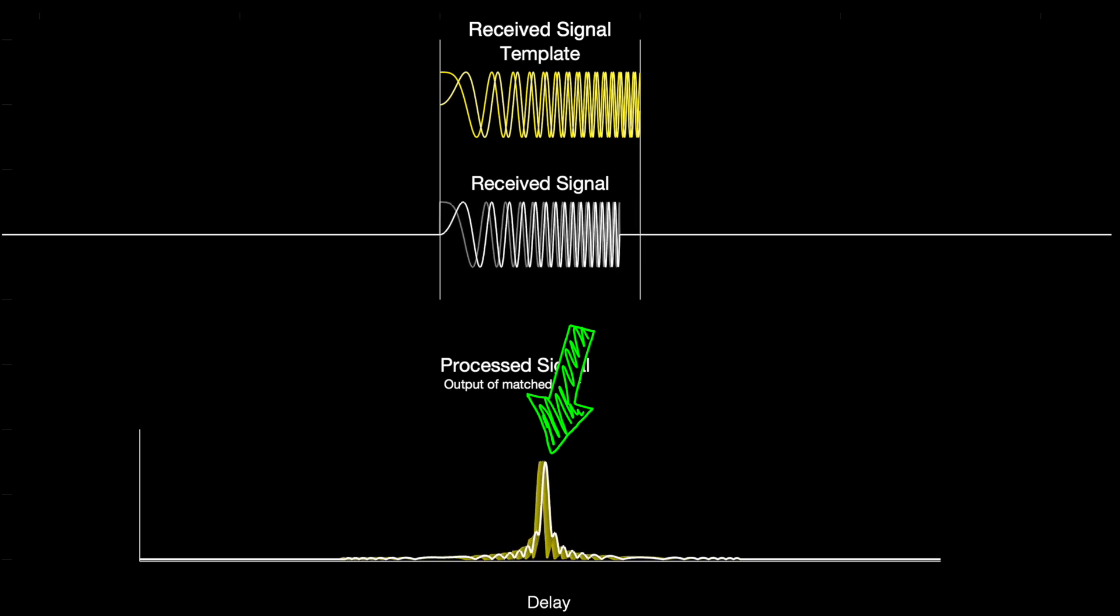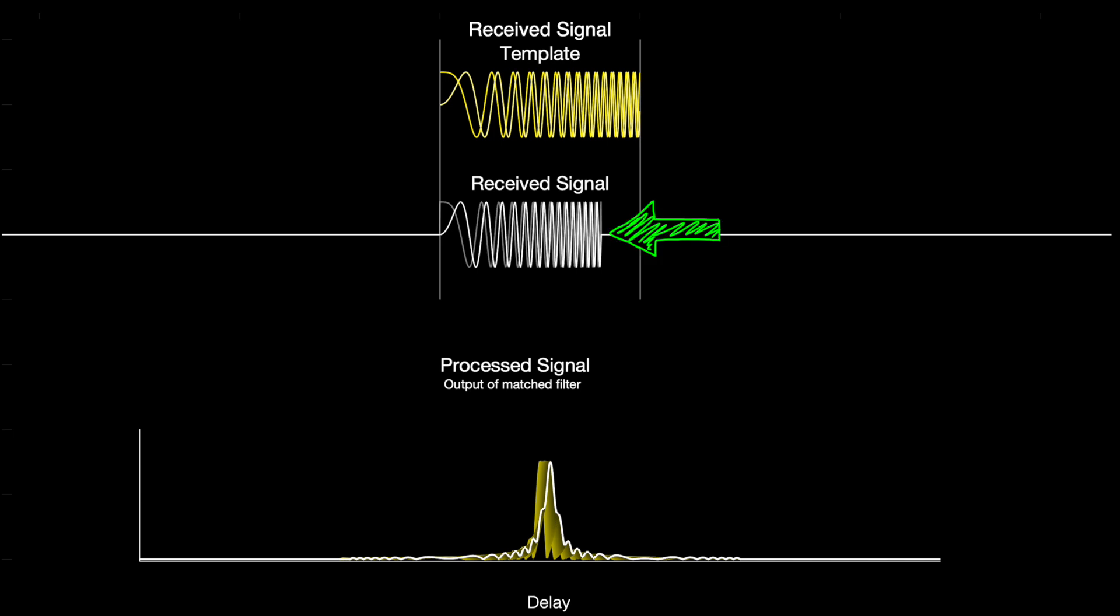So with an LFM waveform, there is a coupling between Doppler and range error that we need to be aware of. And this makes sense if you think about it. Doppler is shifting the frequency. But since the frequency is linearly modulated throughout the waveform, this looks very much just like a change in delay. Most of the frequencies will still exist in the signal, just later or earlier in time.